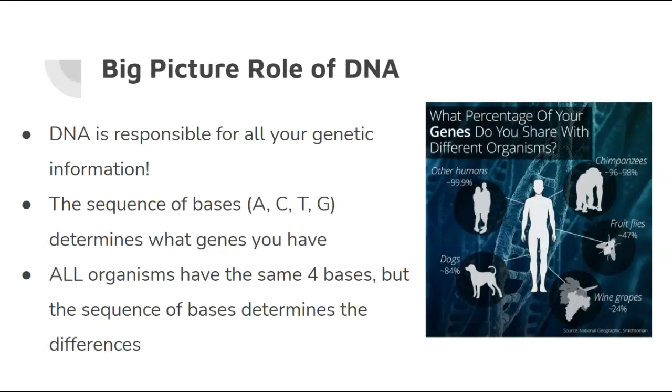And then the last thing is kind of big picture, wrap it all up. So, DNA is responsible for all of your genetic information. It's so important. DNA codes for everything that makes up your body. And the sequence of bases, the A's, the C's, the T's, and the G's, determine what genes you have.